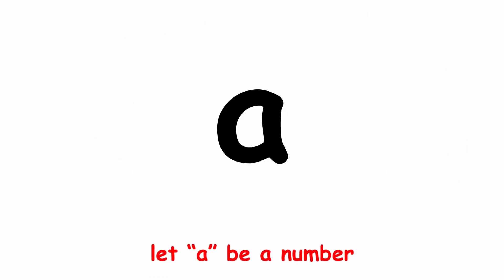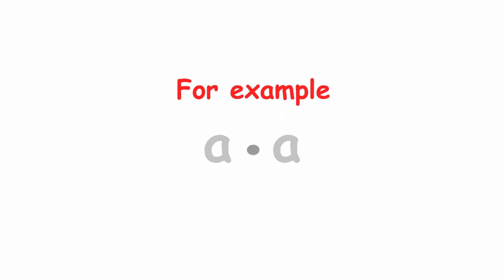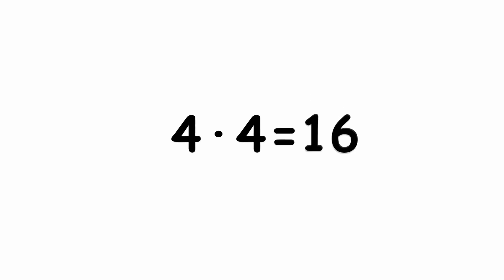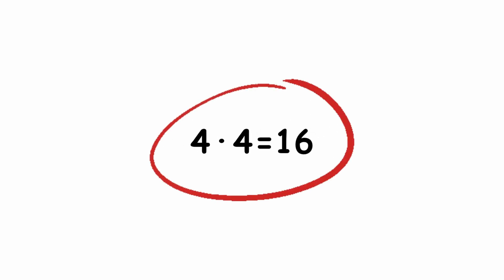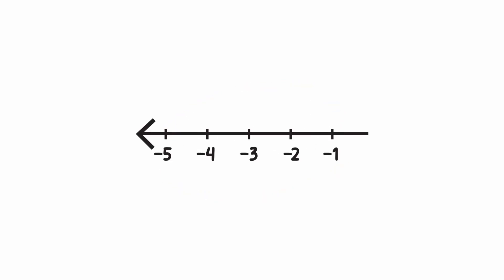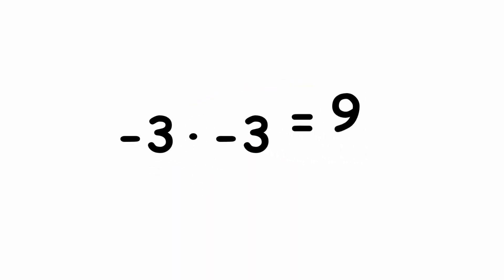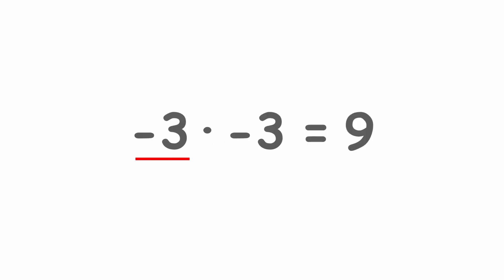To start, consider multiplying a number by itself. For example, 4 times 4 equals 16. This can be done with negative numbers as well. Negative 3 times negative 3 equals 9. Remember, a negative times a negative is a positive.